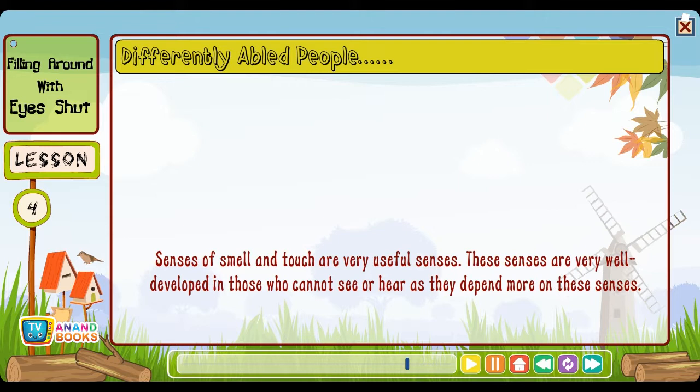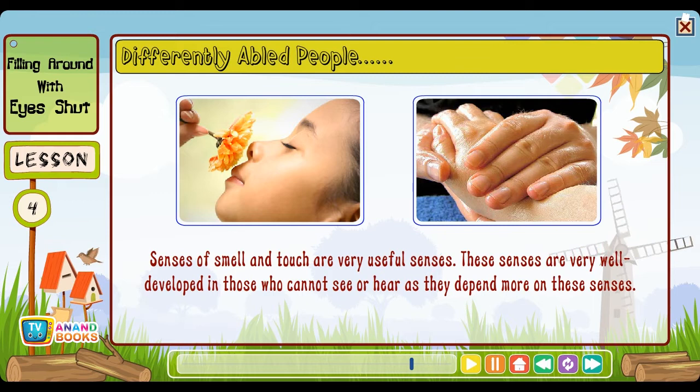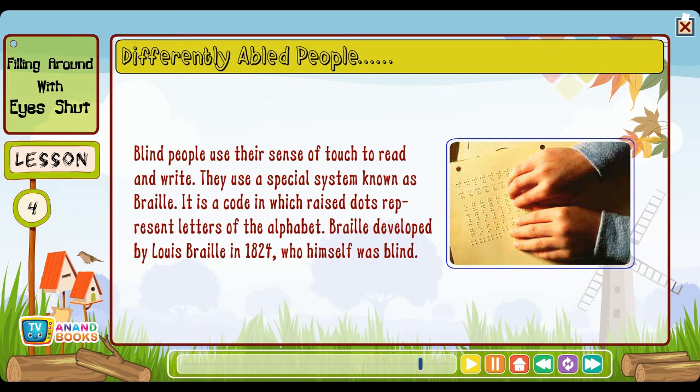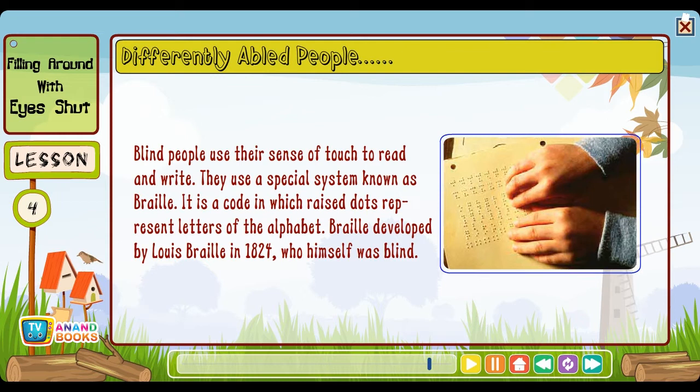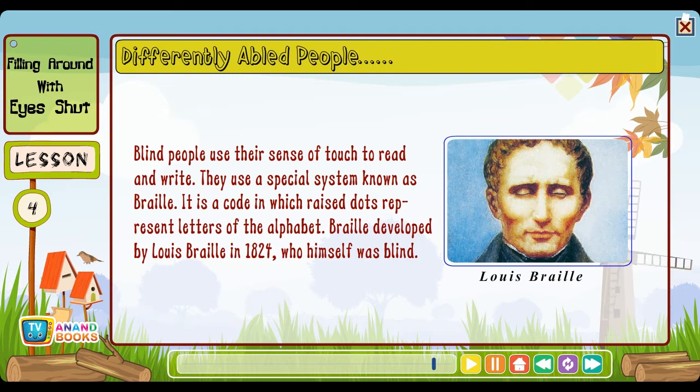Though some people may be allergic to them, most people find the smell of room fresheners, perfumes, deodorants and aftershave lotions very pleasant. The good smell of these products has the ability to cover other foul smells. Differently abled people: The senses of smell and touch are very well developed in those who cannot see or hear, as they depend more on these senses. Blind people use their sense of touch to read and write using a special system known as Braille — a code in which raised dots represent letters of the alphabet. Braille was developed by Louis Braille in 1824, who himself was blind.